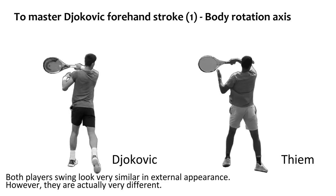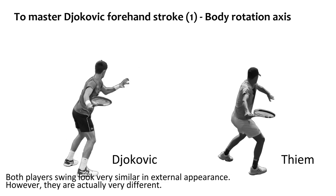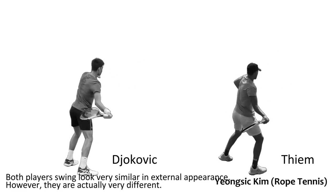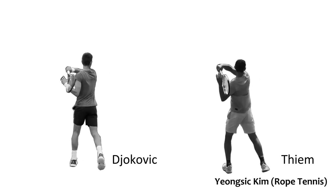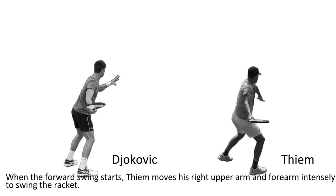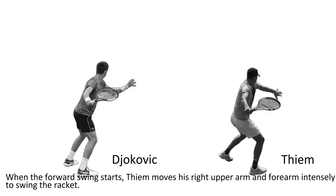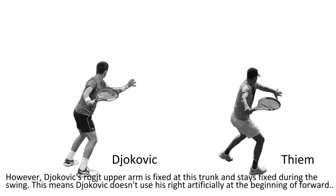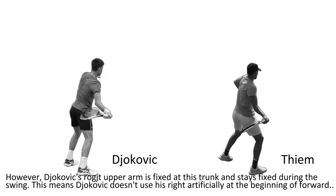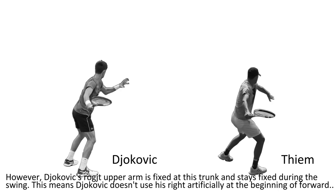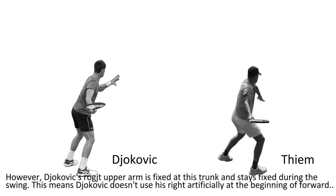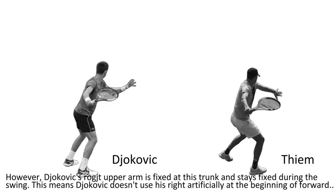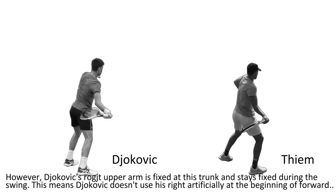Both players' swings look very similar in external appearances; however, they are actually very different. When the forward swing starts, TM moves his right arm forward intensely to swing the racket. However, Chokovic's right arm is fixed at its trunk and stays fixed during the swing. This means that Chokovic doesn't use his right arm artificially at the beginning of the forward swing.